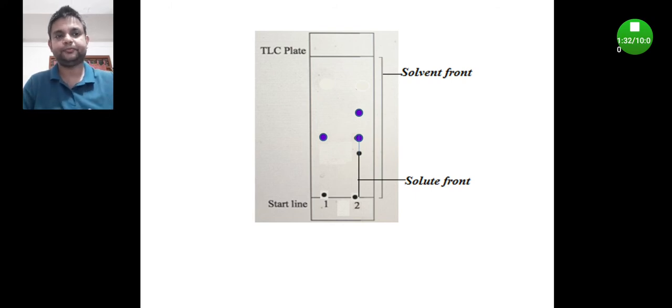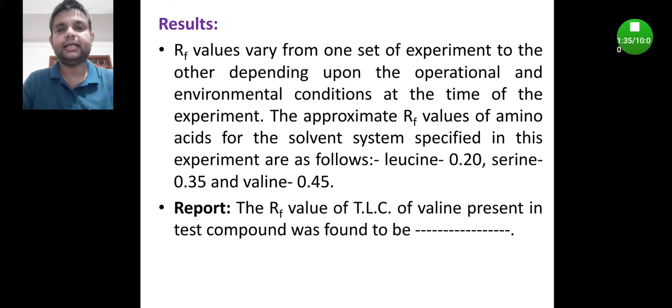The report should be written like this: the RF value of TLC of valine present in the test compound was found to be [value]. In brief, let us rewind that experiment. We prepared the TLC plate over a glass plate and activated this plate inside the hot air oven at 105 degrees Celsius for 30 minutes.